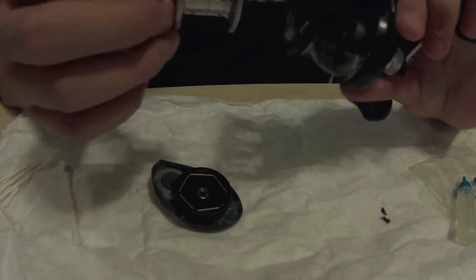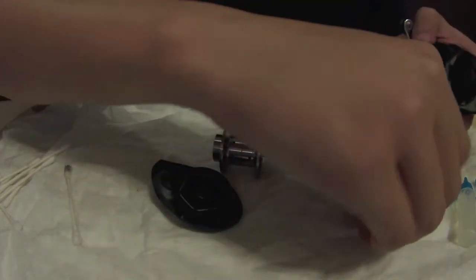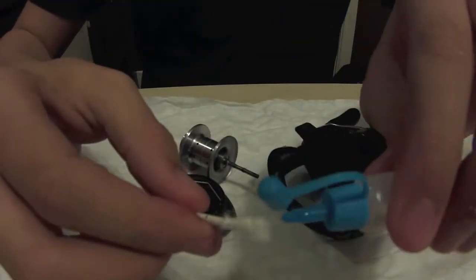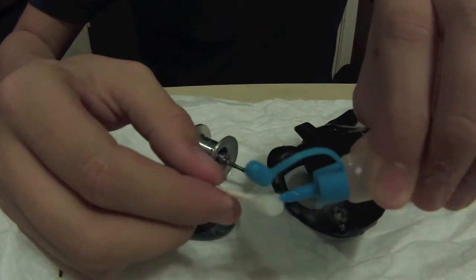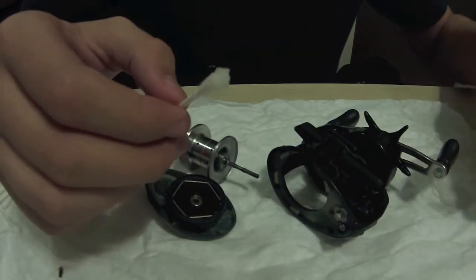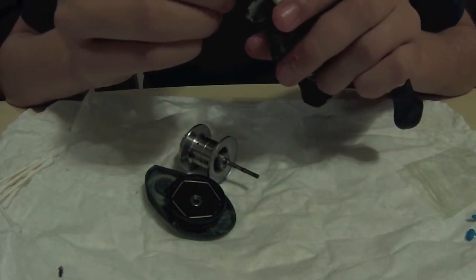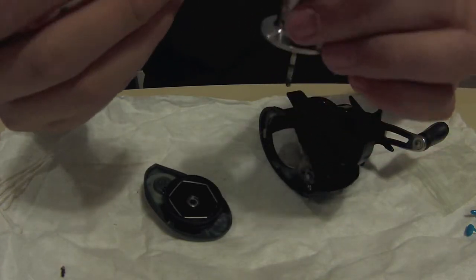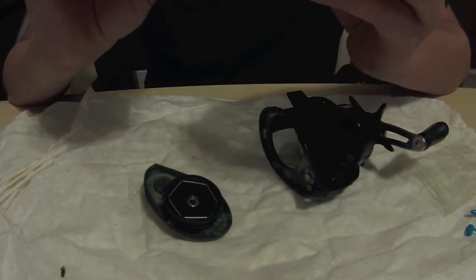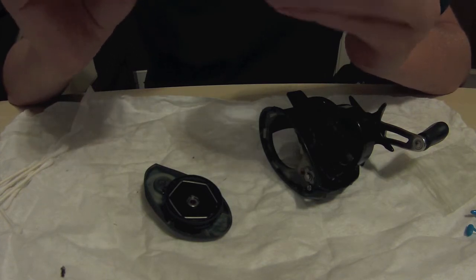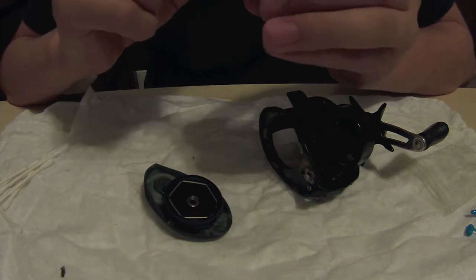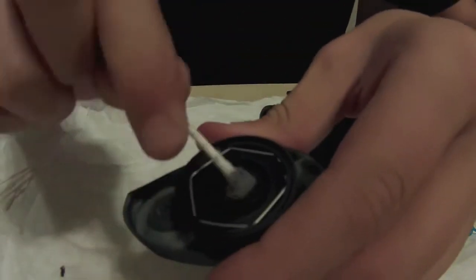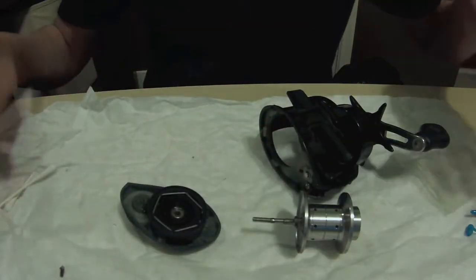Then you can take these little pieces apart, and then we are going to do the same thing that we just did. We're going to get a little bit and just run it around all the pieces of metal. Clean everything up a little bit. Now we're pretty much used it all. We're going to get another Q-tip.